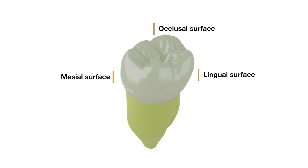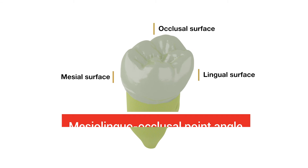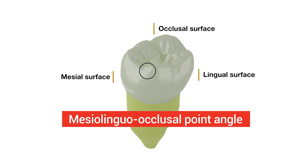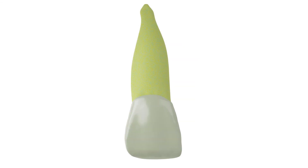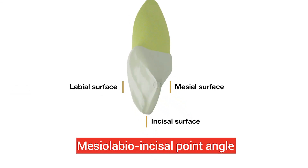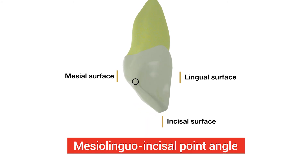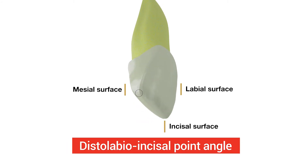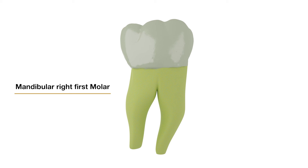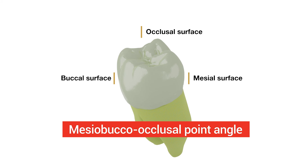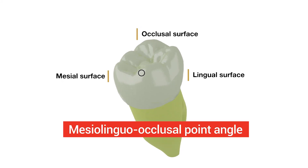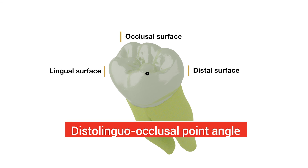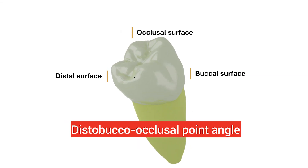Similarly, a point angle is formed by the junction of three surfaces and derives its name from the combination of the names of those surfaces. The point angles of the anterior teeth are four in number: Mesiolabioincisal, Mesiolinguoincisal, Distolinguoincisal, and Distolabioincisal. The point angles of the posterior teeth are also four: Mesiobuccalocclusal, Mesiolinguoocclusal, Distolinguoocclusal, and Distobuccalocclusal.